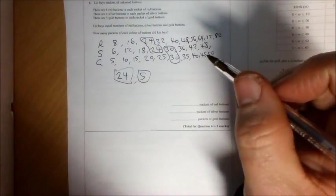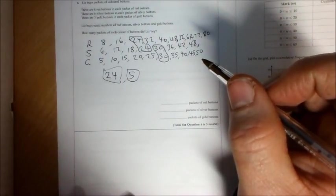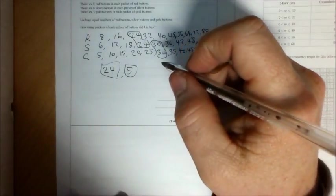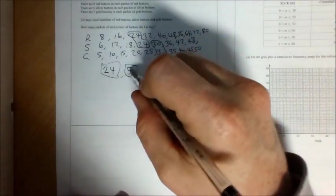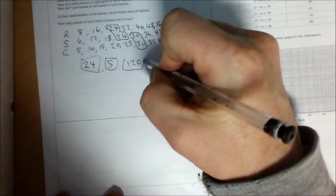The lowest common multiple of those will be I think 120. Yeah, because that's a prime number. So yeah, it'll be 120.